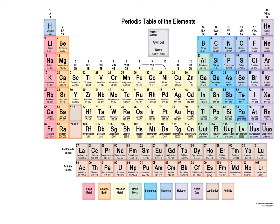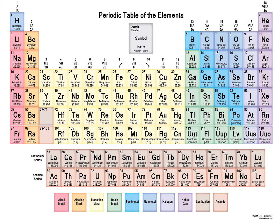Last year you all studied electronic configuration. Electronic configuration is the distribution of electrons of atoms into various orbits or shells. This is an overview of the periodic table in general. Now let us understand the other features — how the elements have been arranged in the modern periodic table.